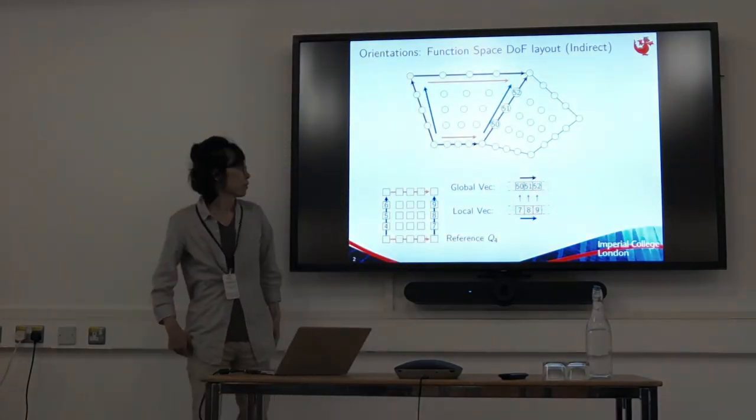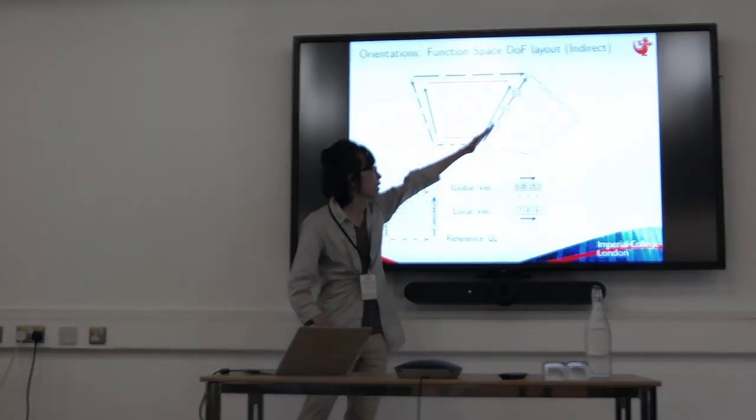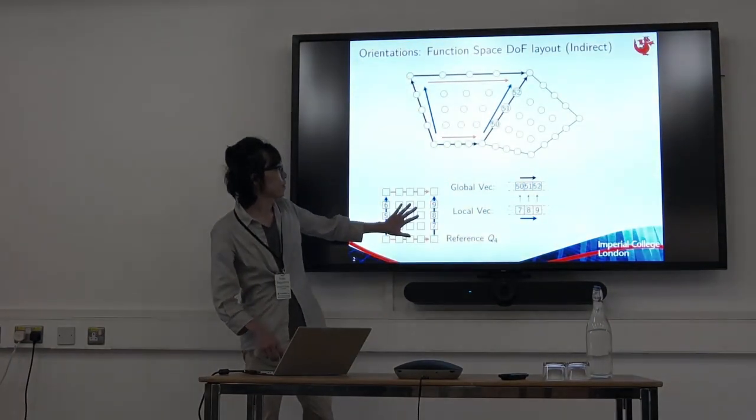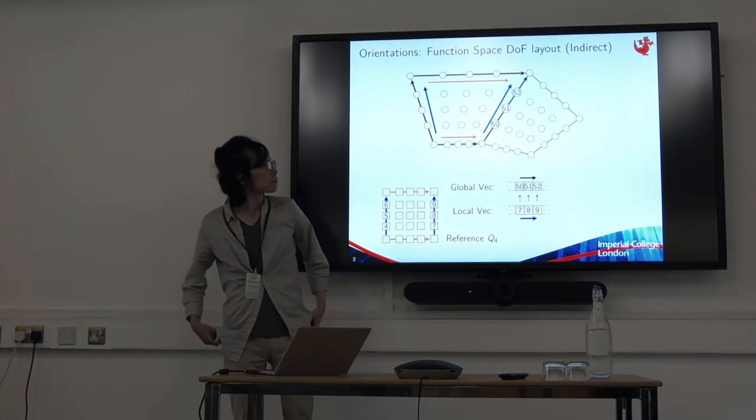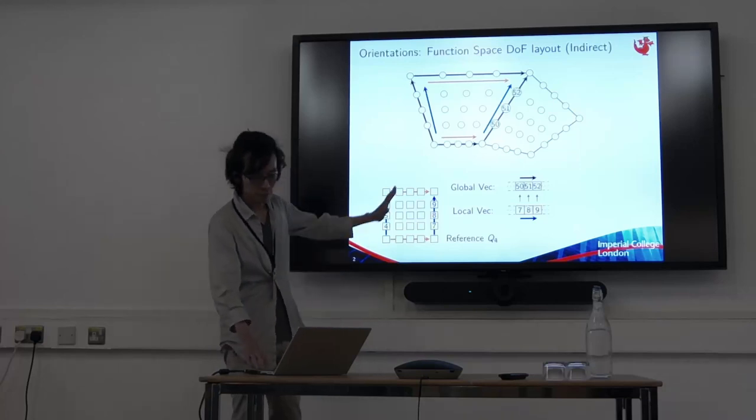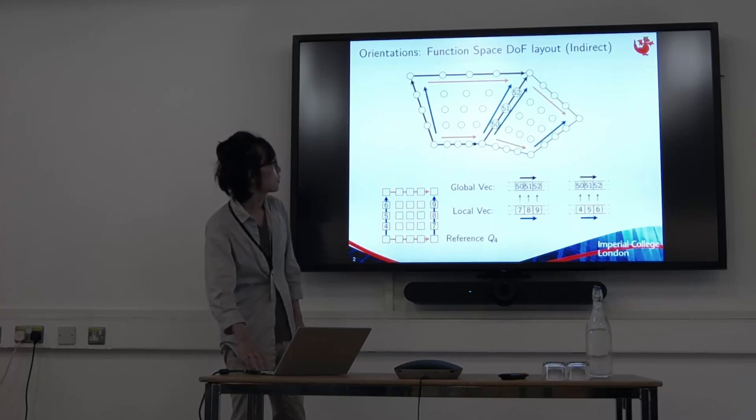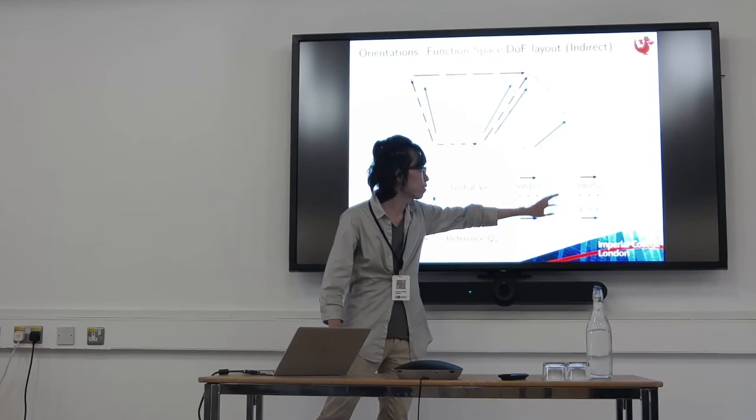The disadvantage of this approach is because we have already determined orientation of this edge, the mapping from this element to this element is no longer arbitrary. But in this example we can come up with a mapping which makes the LG map very simple.